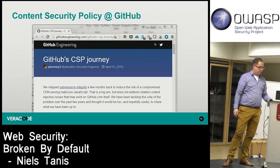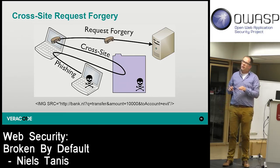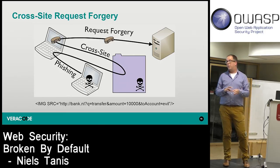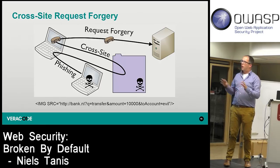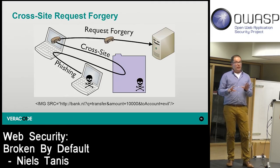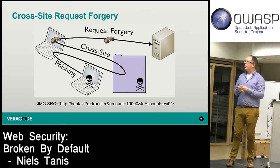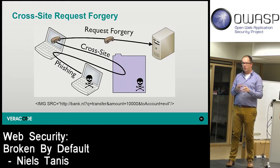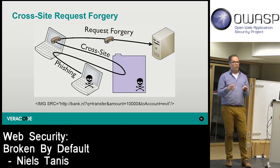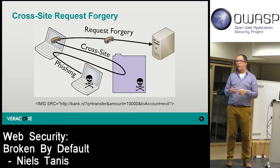Now we move to cross-site request forgery and demos. When you use your banking website, you log on, type credentials, maybe use a random token, and once you're active you have a session on that server. The server doesn't force you to type credentials again — it submits the cookie with the session identifier automatically.